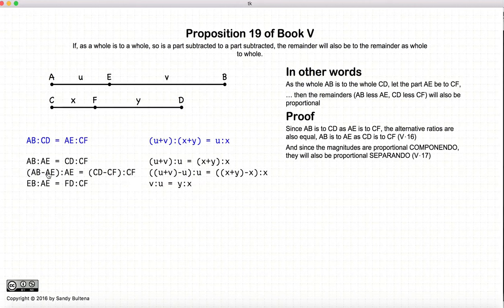Now what's AB minus AE? AB minus AE is simply EB. And similarly, CD minus CF is equal to FD. So we are left with this relationship, that the ratio EB to AE is equal to FD to CF.